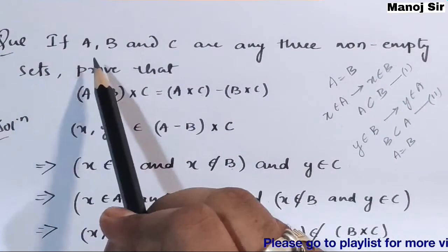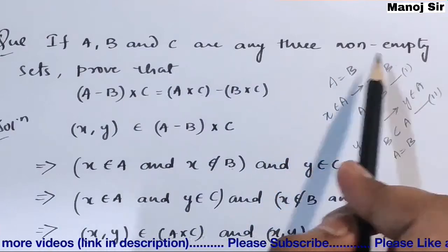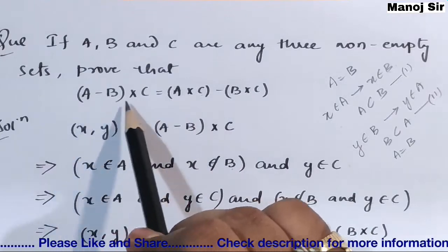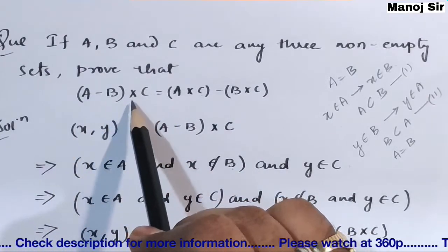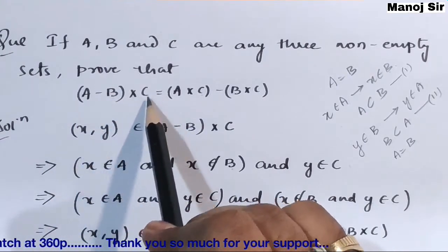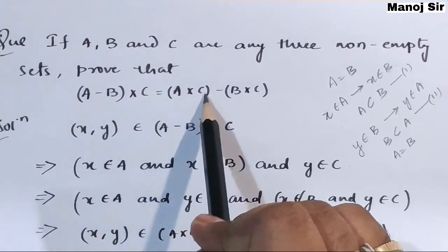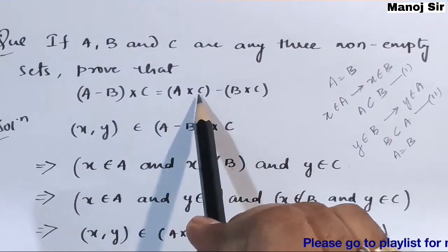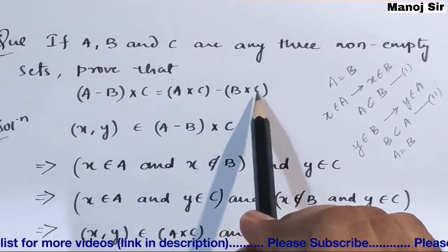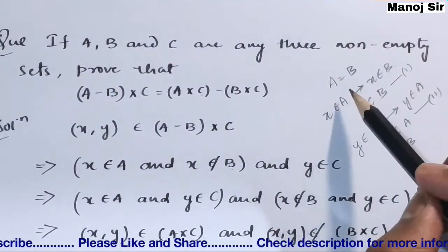The question says: if A, B, and C are any three non-empty sets, then prove that (A minus B) into C equals A into C minus B into C. Here the 'into' sign is the Cartesian product. So (A minus B) is treated as a single set and C is another single set. We need to prove (A - B) × C = A × C - B × C.